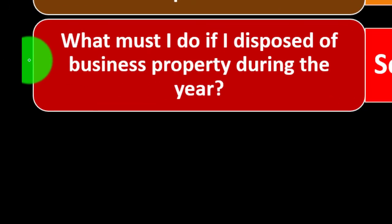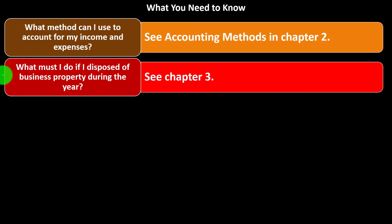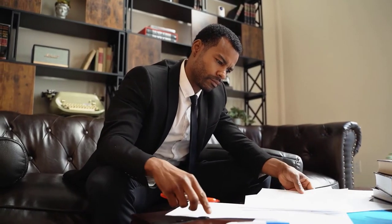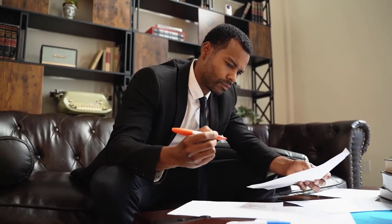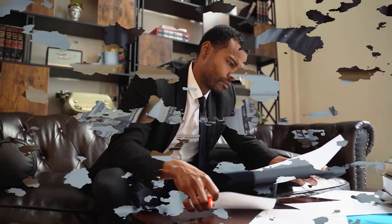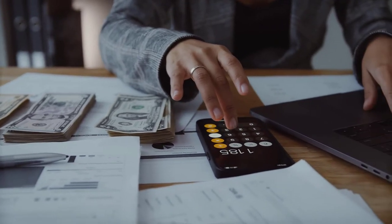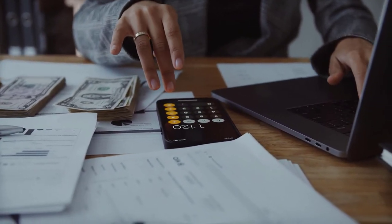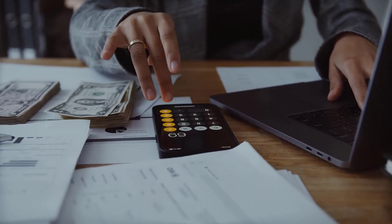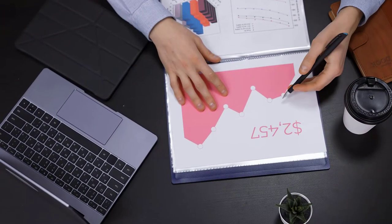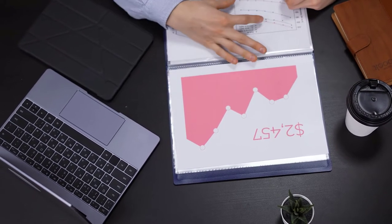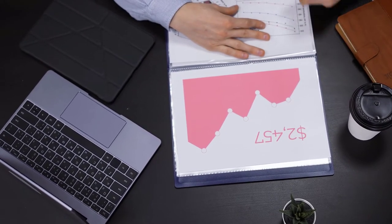What must I do if I disposed of business property during the year? On an income statement this can get complex. You can usually choose between a cash method or an accrual method — we'll discuss these more later — or some hybrid. The key is consistency: once you choose a method, stick with it. Inventory tends to push you toward an accrual method by its nature.